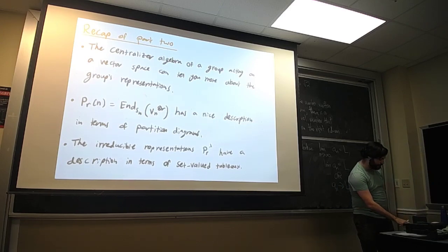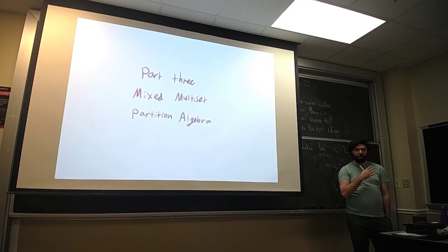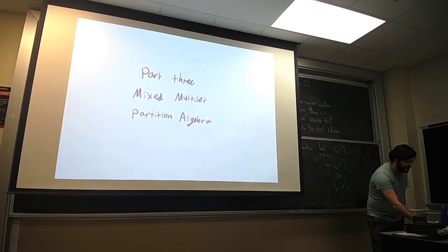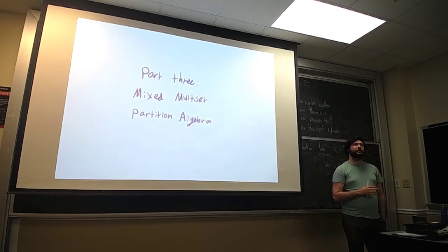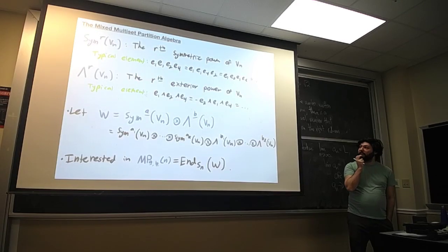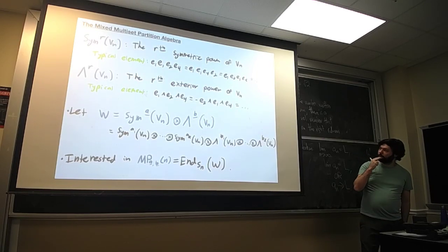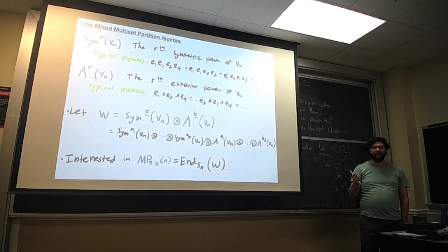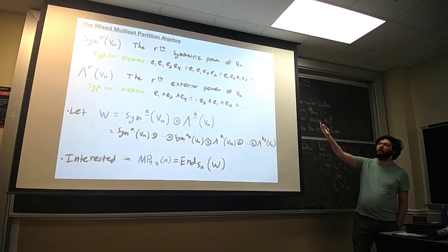Moving into part three, which is a lot of what I've been working on personally — something called the mixed multisight RSK. I wanted to take this idea of the tensor power and add some symmetry to it. I'm replacing the tensor power with a symmetric power, which looks like sequences but where we forget the order. So e1⊗e1⊗e2⊗e4 is the same as e1⊗e1⊗e4⊗e2. We also have the exterior power, where swapping two elements incurs a minus sign: e1∧e2∧e4 equals negative e2∧e1∧e4.